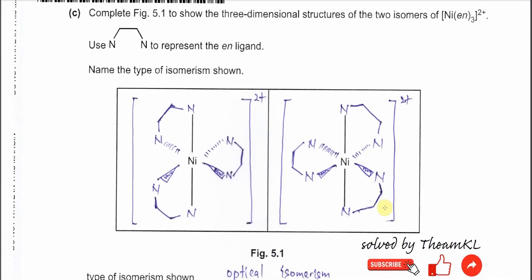Part C. Complete figure 5.1 to show the three-dimensional structure of the two isomers of the nickel with 3 EN complex ion.